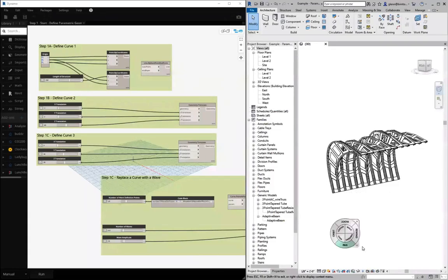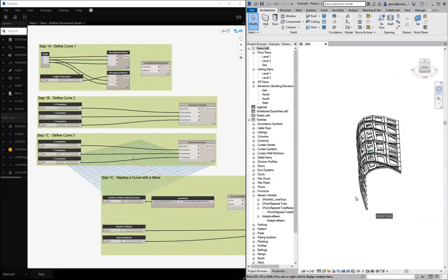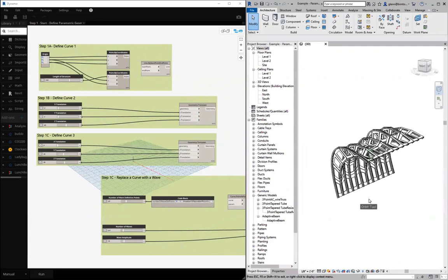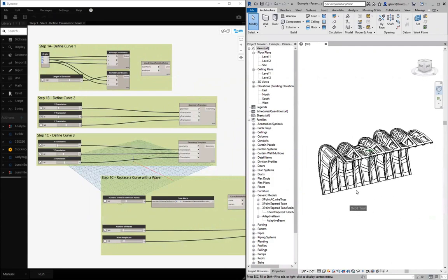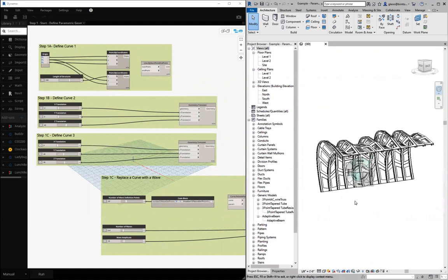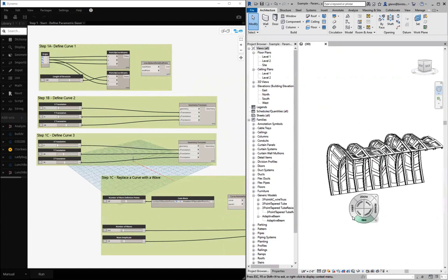So just to give you an example of where we're going, if you take a look at this image, you can sort of see a little parametric structure. It's kind of a linear structure that hunches over. And what we've done is basically placed a number of rib components as well as panel components between those ribs.